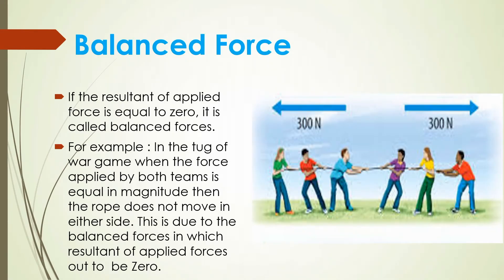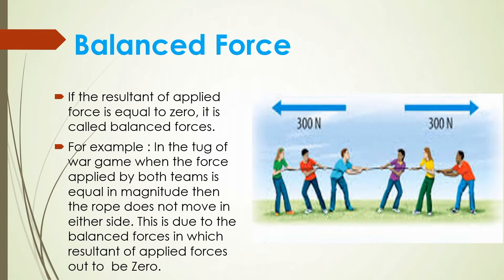Next is balanced force. What is balanced force? Suppose there is a rope being pulled from both ends with the same amount of force. In this figure, we can see a force of 300 N applied from both ends. So the net force will balance out: 300 N minus 300 N equals zero. The net resultant force is zero. We call this a balanced force. In balanced force, the object will not move — it will remain stationary in its position.